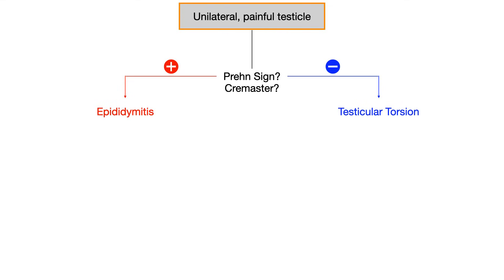Just for completeness sake, I'm going to put some more stuff on the slide that you could look for in the question stem. But remember, the Prehn's sign and the cremaster reflex are how you figure out if it's epididymitis or testicular torsion. All this other stuff is just extra.